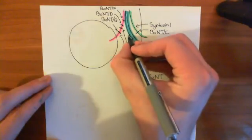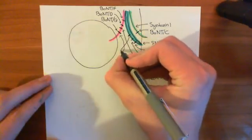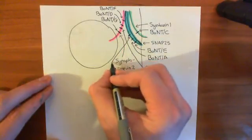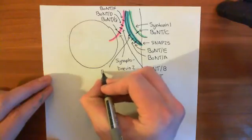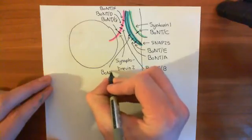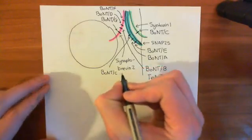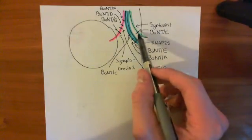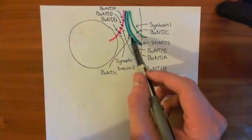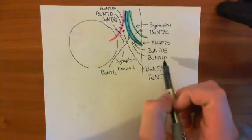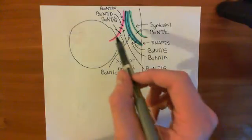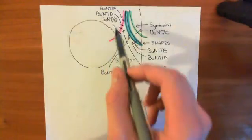Finally, there is another one that we've already seen before that cuts SNAP25, slightly upstream of these two. And this is botulinum neurotoxin C. So basically, botulinum neurotoxin C cuts both syntaxin 1 and SNAP25. Botulinum neurotoxin A and E both only cut SNAP25. And B, D, F, and G all cut synaptobrevin.